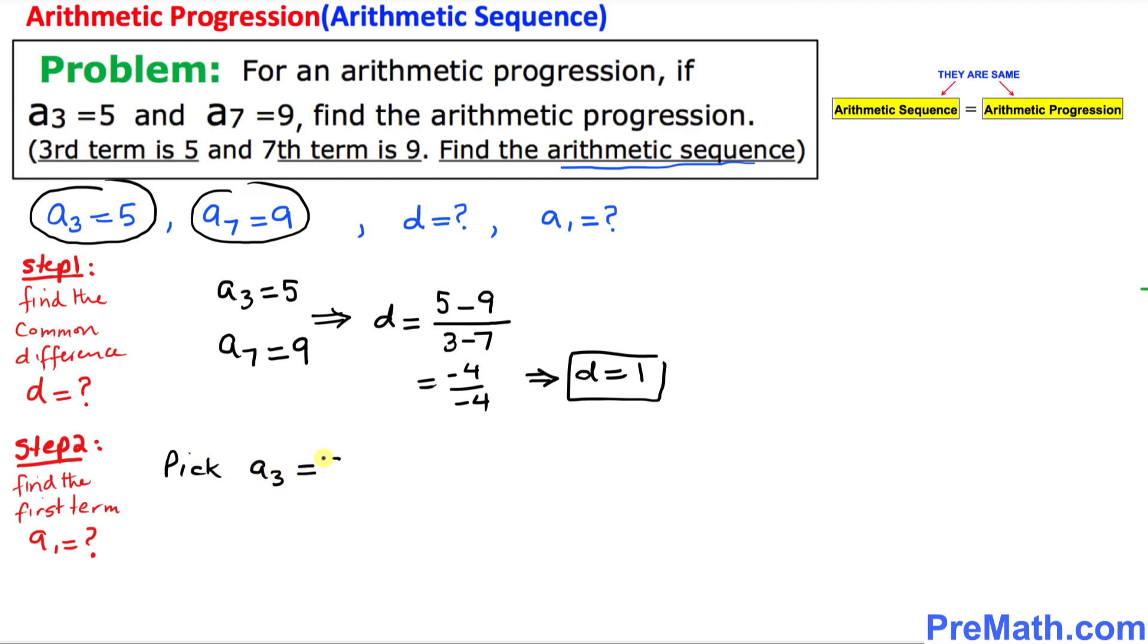That tells me that the subscript over here is 3. That tells me that our n term, n = 3. And now we will be using this arithmetic progression formula.